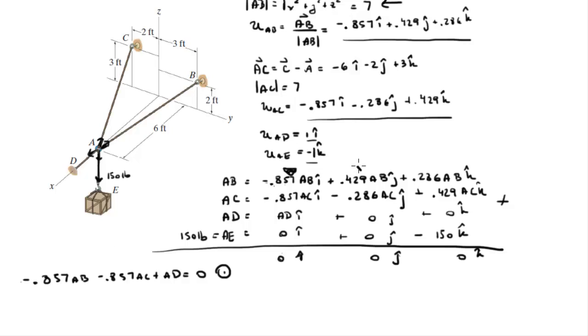The second equation is given by the second column, which is 0.429 a, b minus 0.286 a, c is equal to 0.